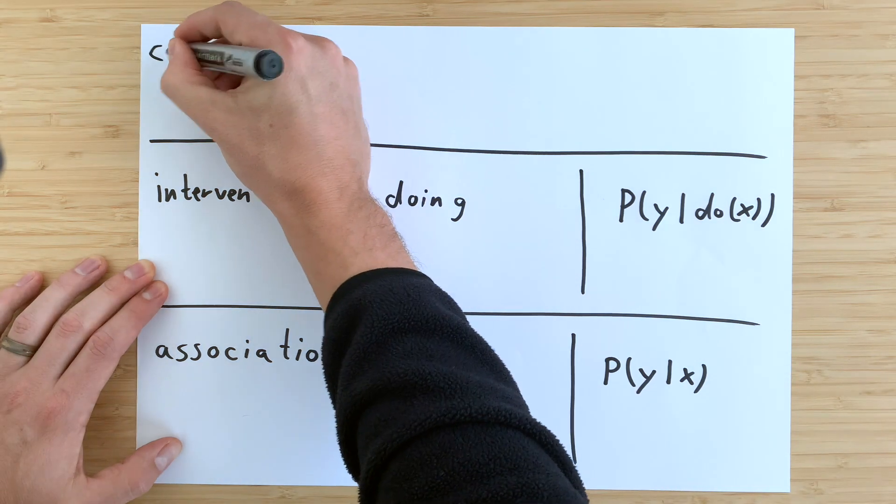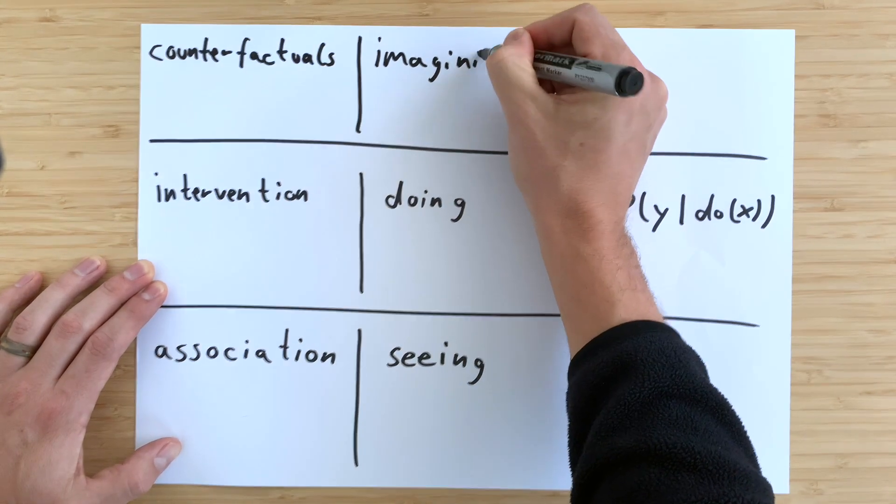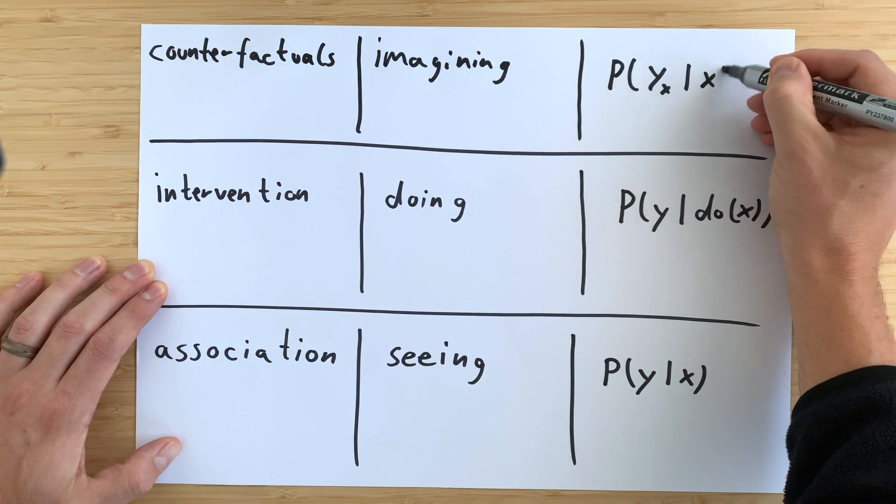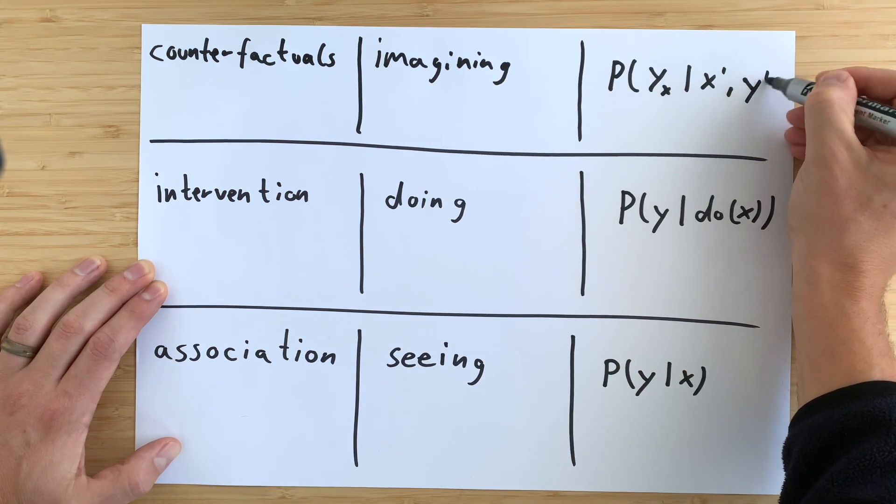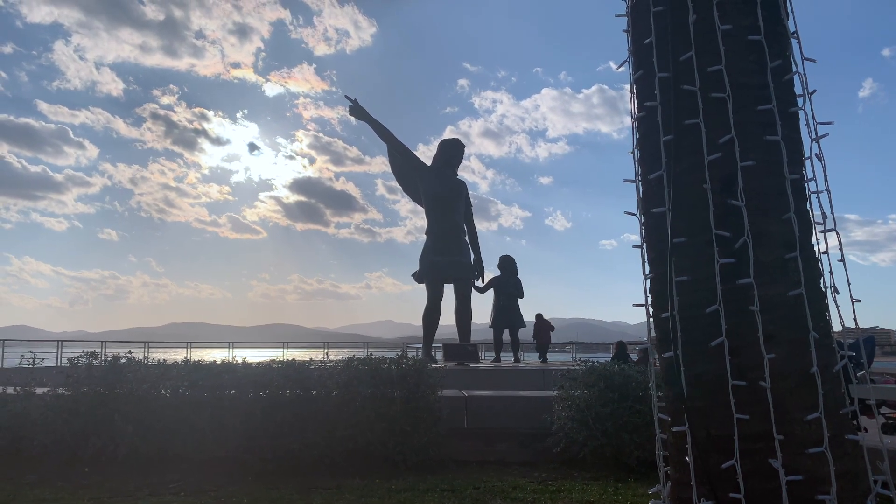The highest level is called counterfactuals. It is about imagination. It is about what makes us human. I think it embodies what most of us do all the time: to ask the what-if questions.